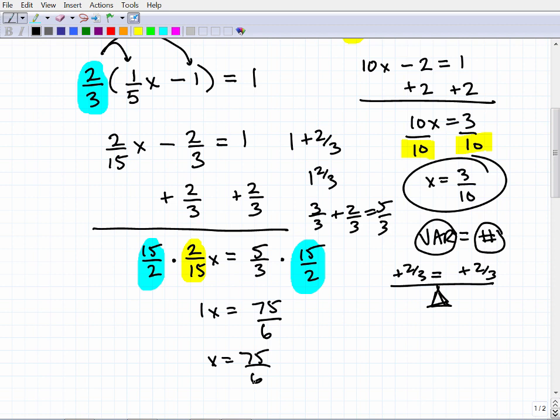Let me see if this can be reduced. I don't think so, but let's check with my little trusty calculator. Yes it actually can. So 3 goes into this 25 and 3 goes into this 2. I probably would have seen that if I stood back and took a pause. So this would be our final answer.